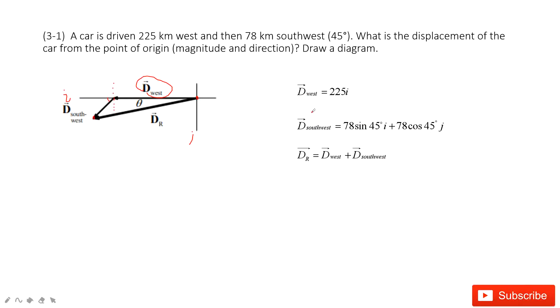Then we do the calculation for two vectors. That means i component plus i component, j component plus j component. That's all. Thank you.